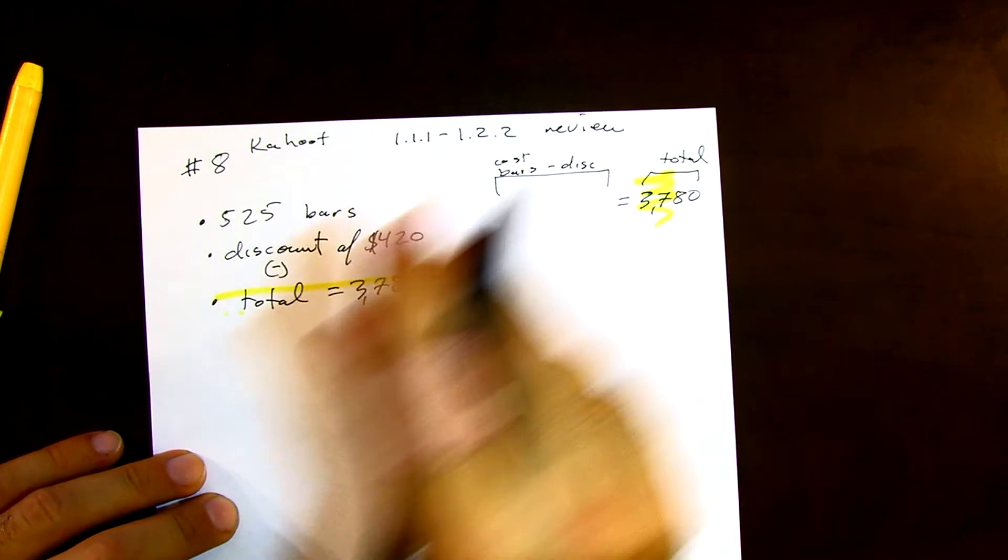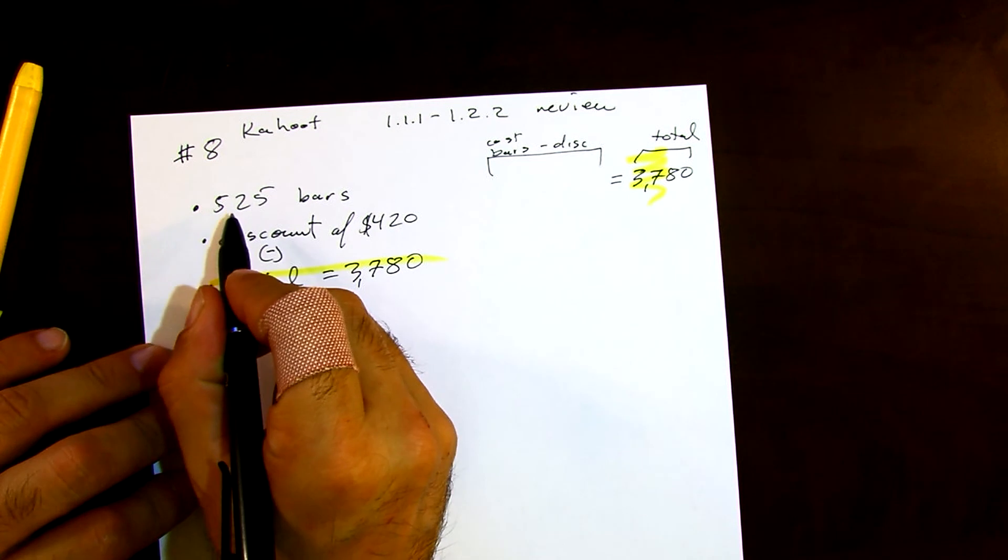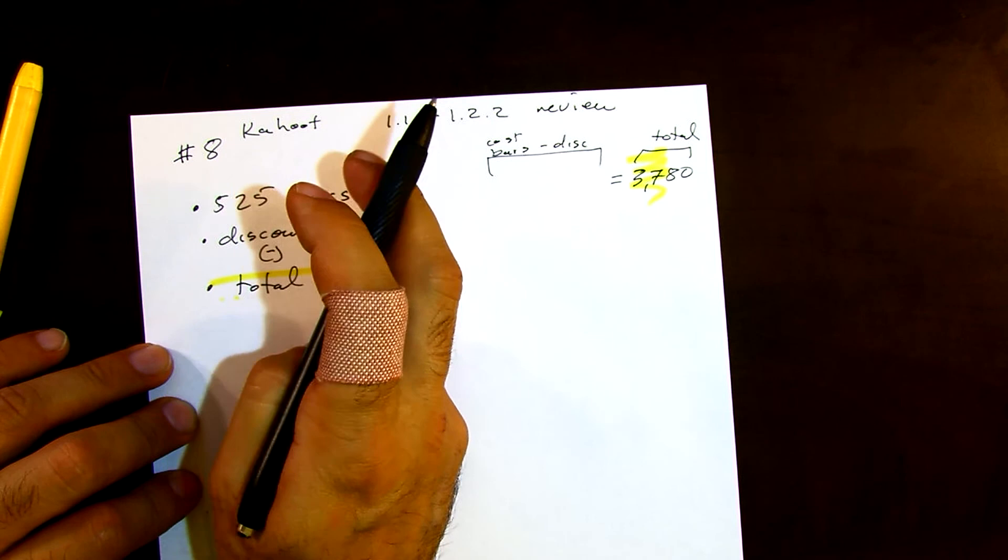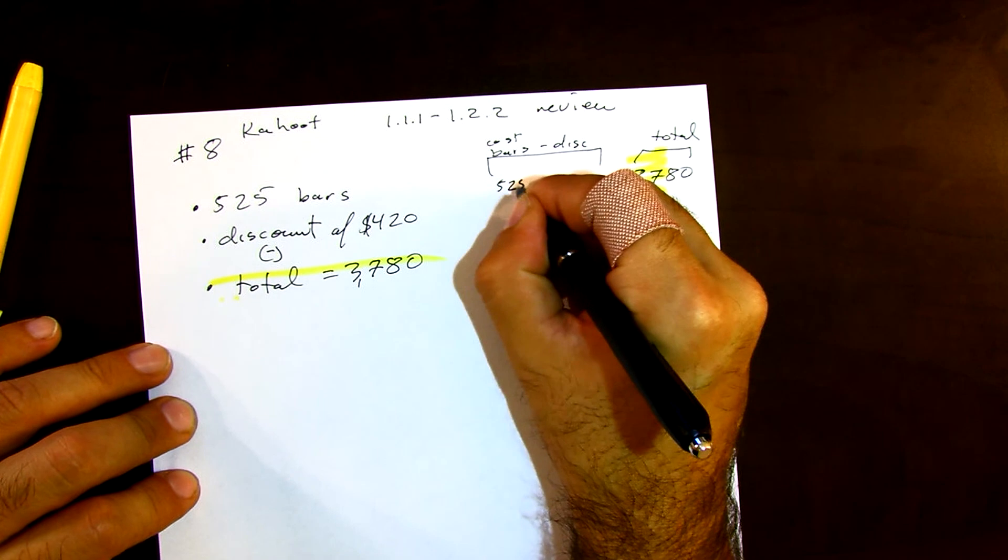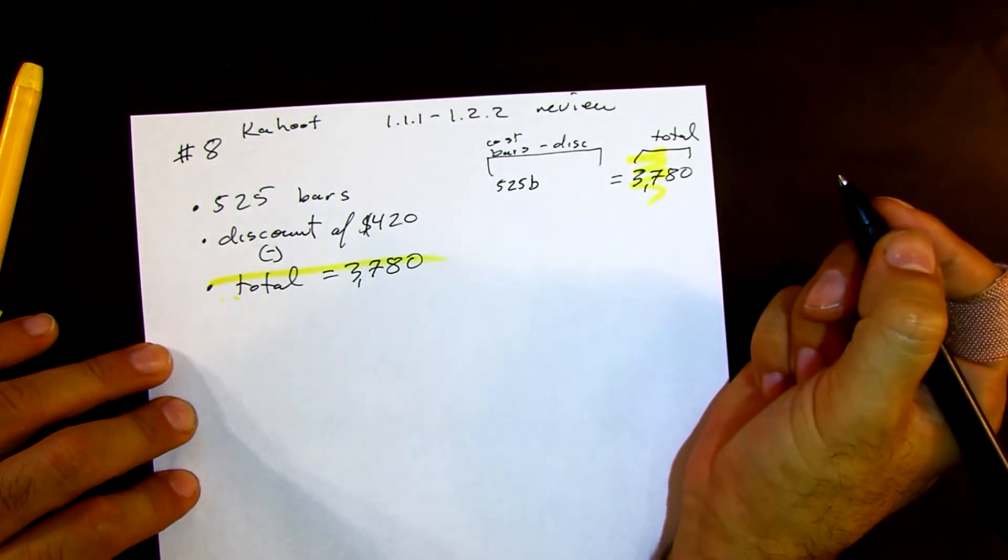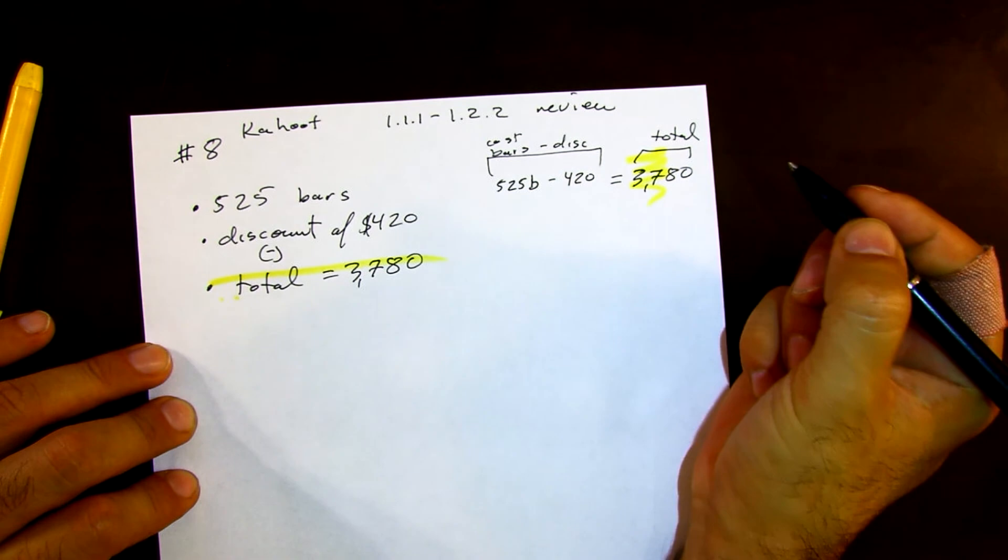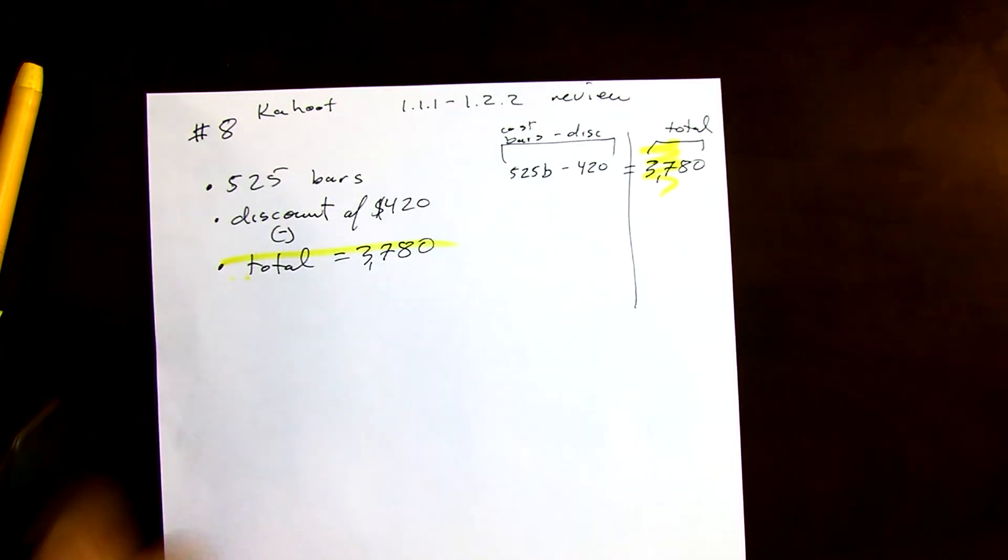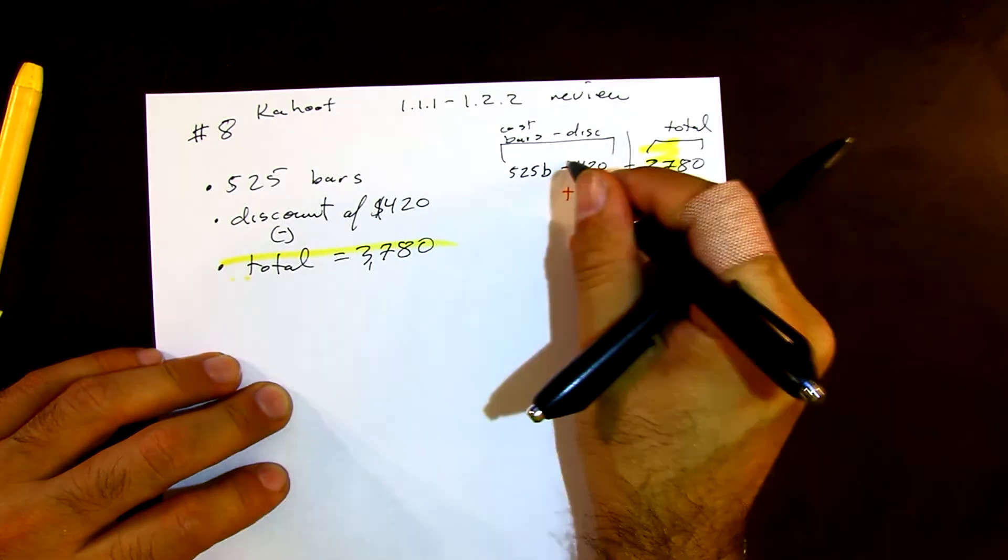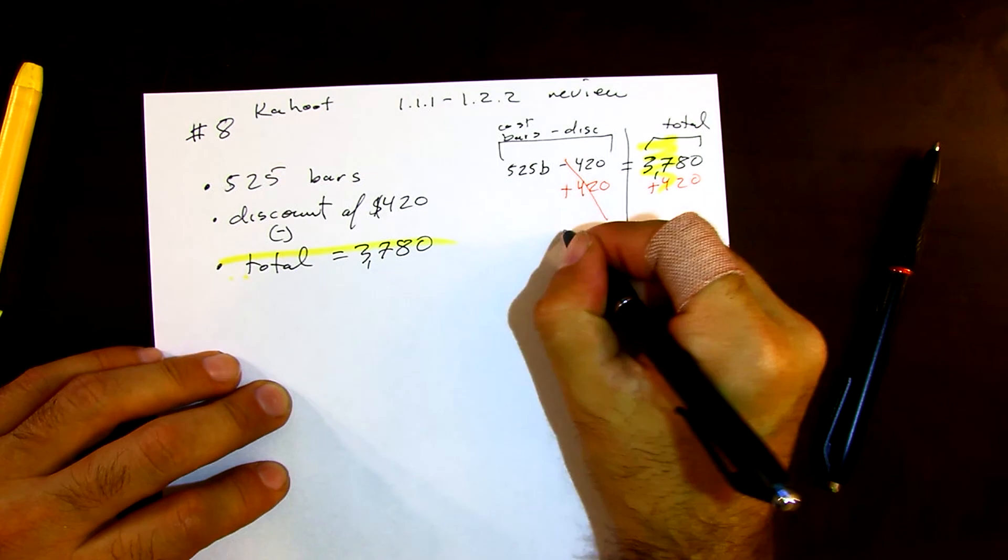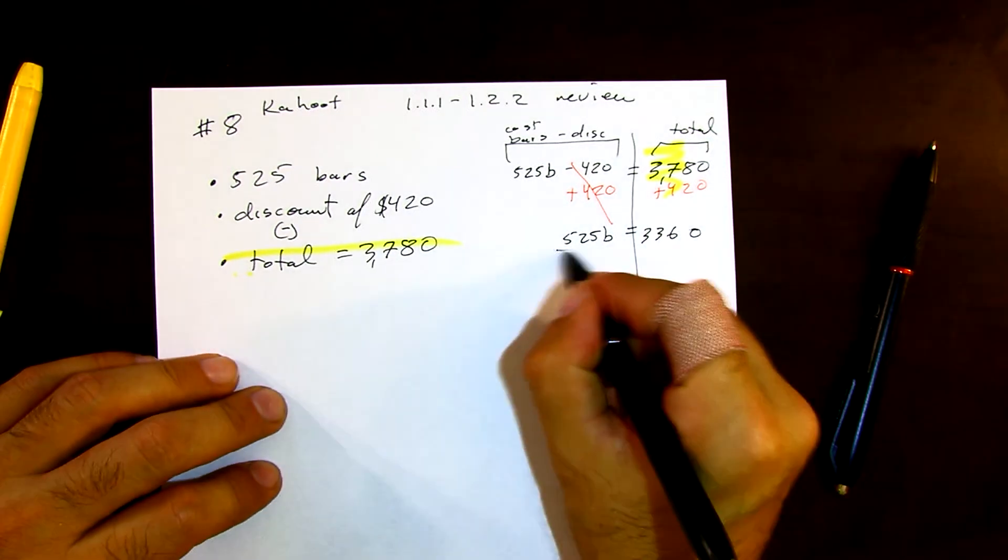The total cost is the cost of the bars minus the discount. We have 525 bars times the cost per bar, minus the $420 discount. Then we add 420 to both sides. 525B equals, let me check this.